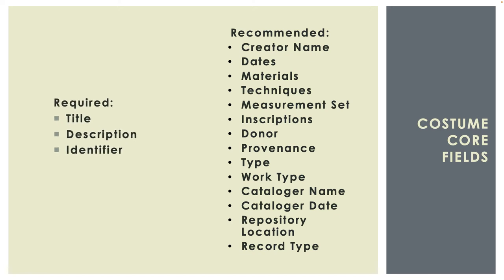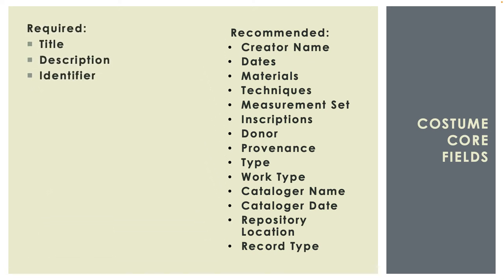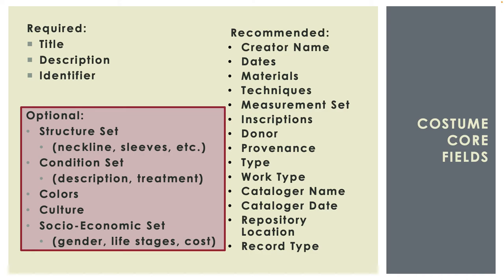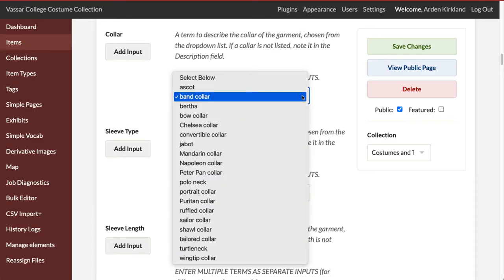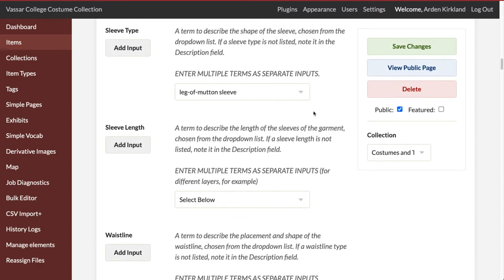Costume Core recommends fields to add that are specific to costume objects, so that across our discipline we can be consistent. Once you have those fields in place, Costume Core also recommends drop-down lists of vocabulary terms to choose from.